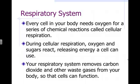Every cell in your body needs oxygen for a series of chemical reactions called aerobic cellular respiration. During cellular respiration, oxygen and glucose react releasing energy — the usable energy by the cells called ATP, adenosine triphosphate. Your respiratory system removes carbon dioxide, which makes it part of the excretory system, and it removes some other waste gases from your body as well.